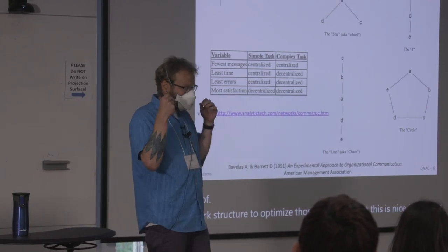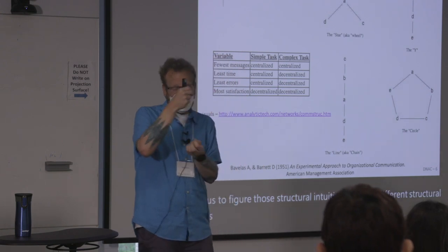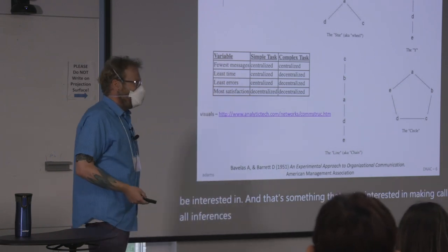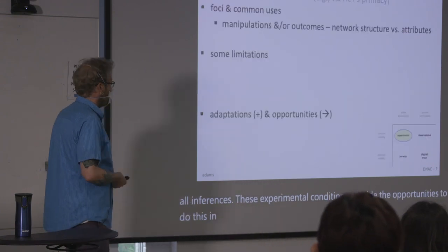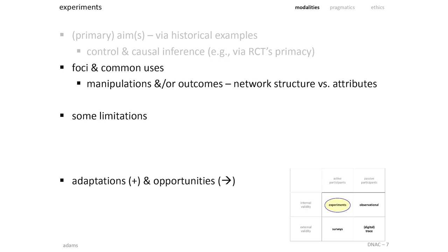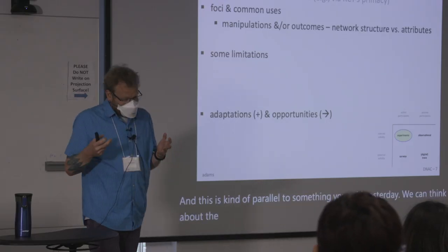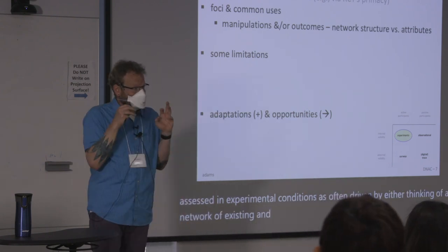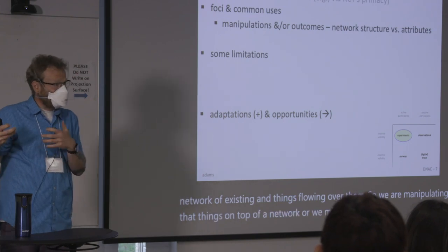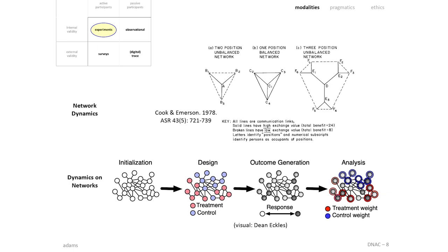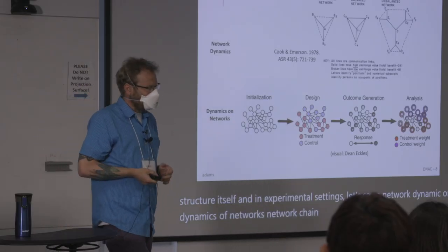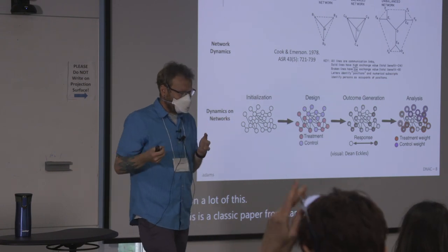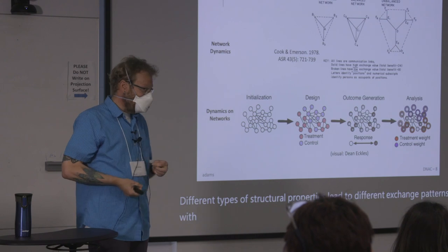This is nice because it allows us to think about what different structural patterns generate in terms of processes or outcomes we might be interested in. If we're interested in making causal inferences, experimental conditions provide the opportunity to do this in useful ways. We can think about outcomes being assessed in experimental conditions as driven by thinking of a network as existing with things flowing over it, or by manipulating the network structure itself. The social exchange literature has done a lot of this — going back to a classic paper by Karen Cook and Emerson, where they show different network structural properties lead to different exchange patterns within an experimental population.